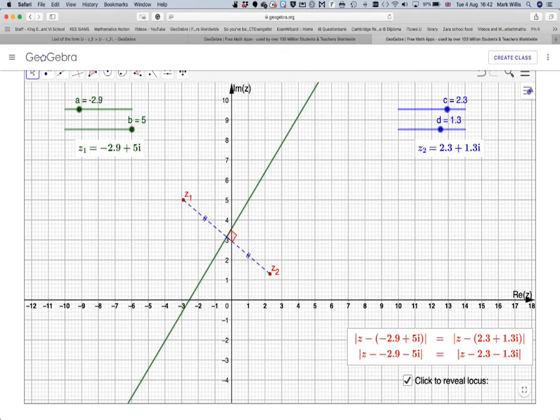Okay, so this has been a video to show you when the modulus of a complex number z minus a complex number is equal to the modulus of z minus another complex number, and then drawing that on an Argand diagram. I hope you've understood, and I thank you very much for watching. I remind you the GeoGebra app link will be in the notes of the video, and I hope you enjoy the video.